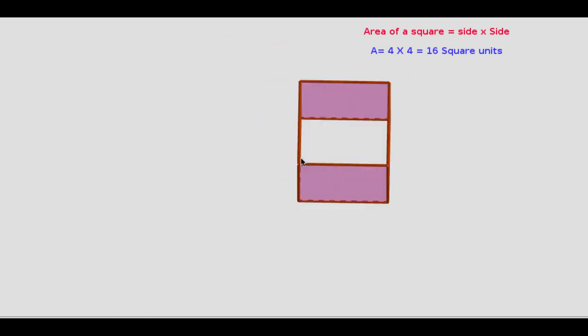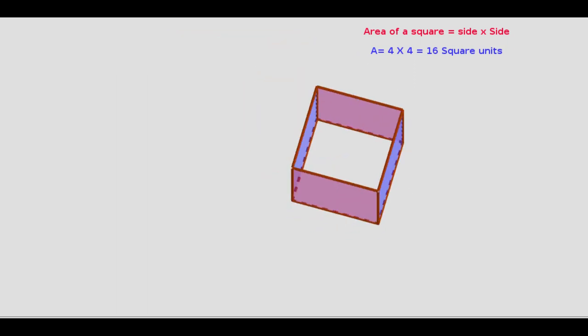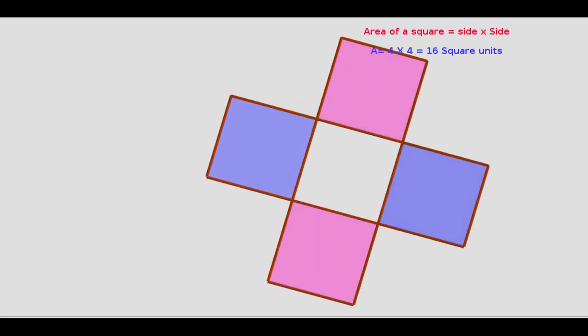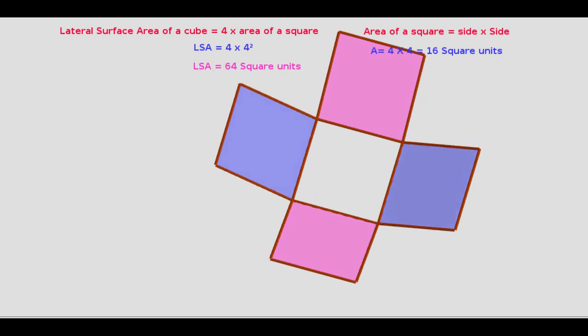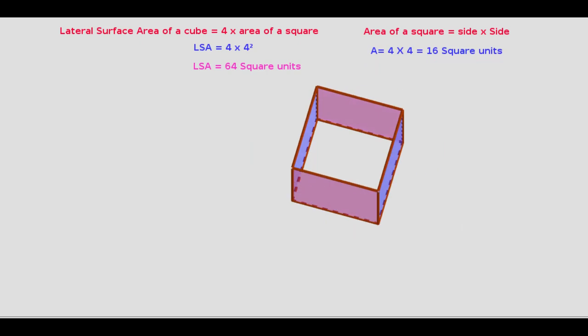Sometimes, we need to find the area of only four faces of the cube, excluding the top and bottom faces. At that time, we add only the area of four sides. This is called the lateral surface area of the cube: LSA = 4a². The unit of measurement is square units. As the length changes, the area also changes.